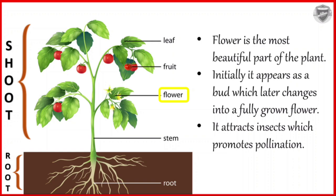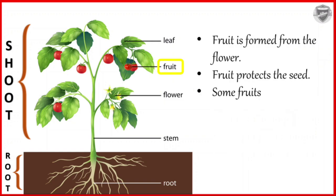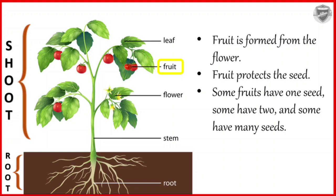The next part is fruit. Fruit is formed from the flower. Fruit protects the seed. Some fruits have one seed, some have two seeds, and some have many seeds.